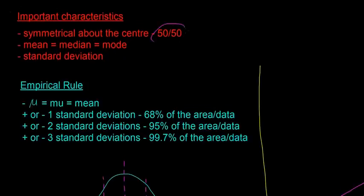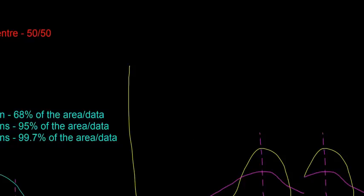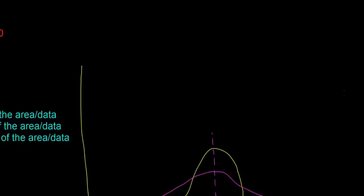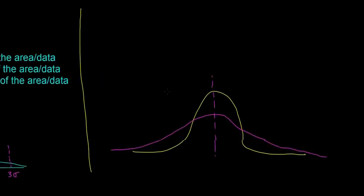That they're symmetric about the center 50-50. The mean, the median and the mode are all in the same place. And the standard deviation follows the empirical rule. So those are the important things about normal distributions.